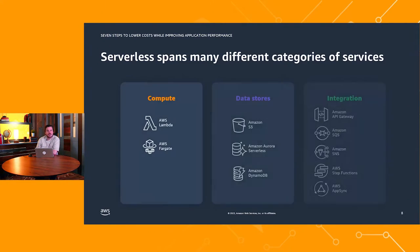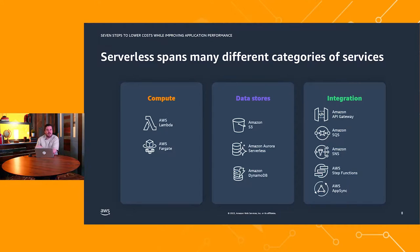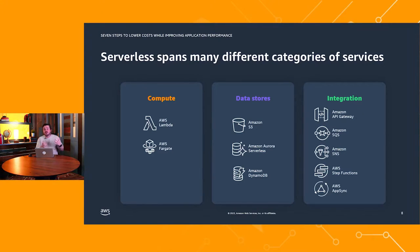When people think about serverless, they naturally think about Lambda and AWS Fargate. But keep in mind there are more serverless offerings than just those compute platforms — things like Amazon Aurora Serverless, a database service that is completely serverless with no management on your behalf, as well as API Gateway and Step Functions. So don't just think about Lambda and Fargate. Explore other options that could help reduce your management overhead, improve performance, and lower costs.